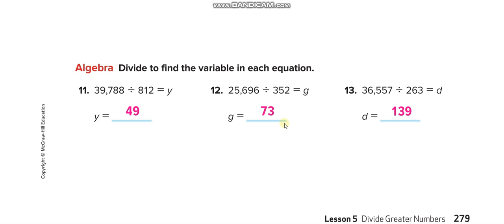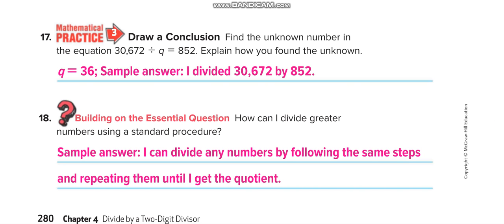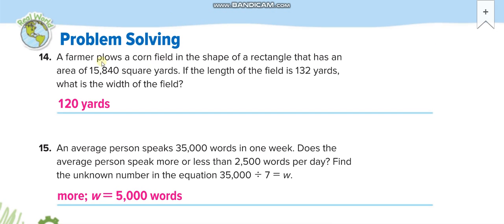A farmer plows a corn field in the shape of a rectangle that has an area of 15,840. If the length of the field is 132 yards, what is the width? So you know that area is equal to length times width. So you have the length, you want to find the width, so divide it. When you divide them you'll get 120 yards, which is width.